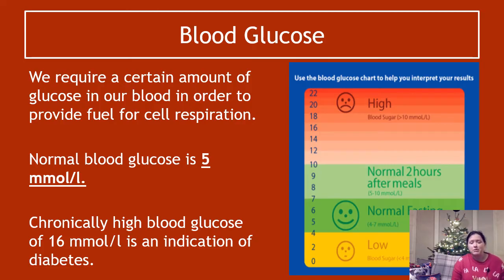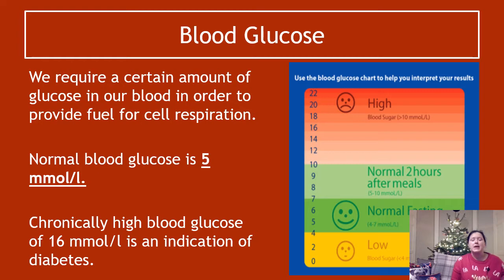Chronically high blood glucose of around 16 millimoles per litre is an indication of diabetes. If your blood glucose gets high and stays high, that is an indication of diabetes — something that doctors or practitioners would look out for to diagnose the condition.